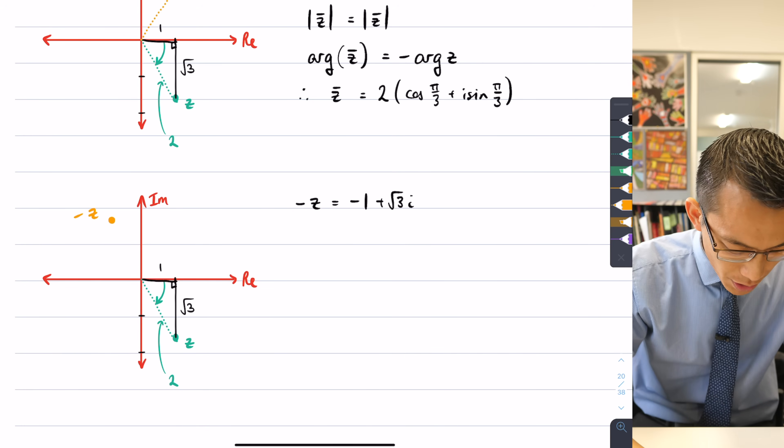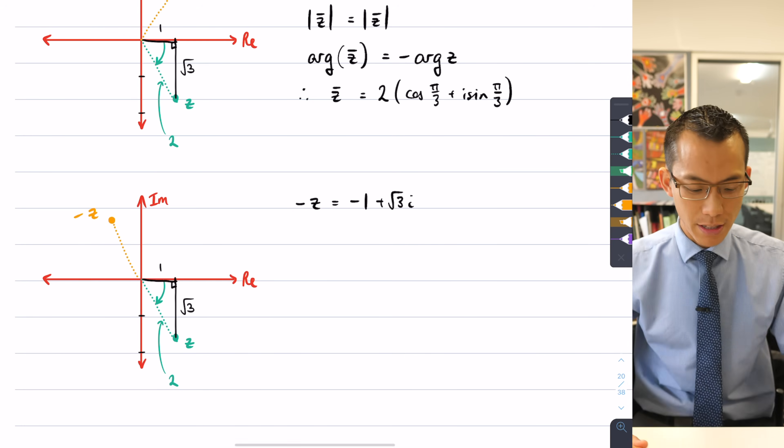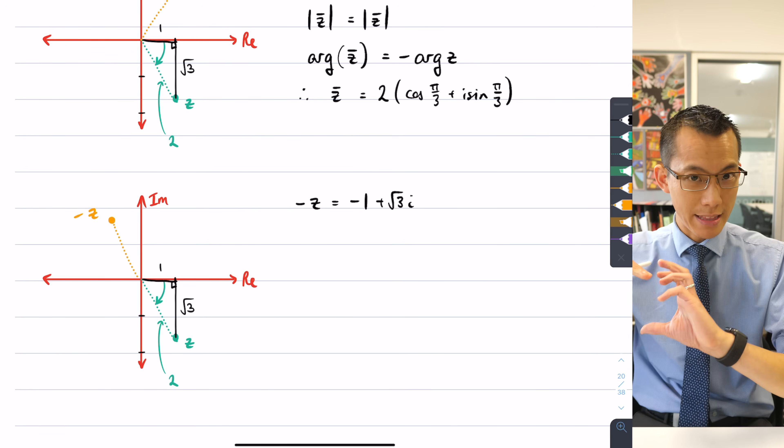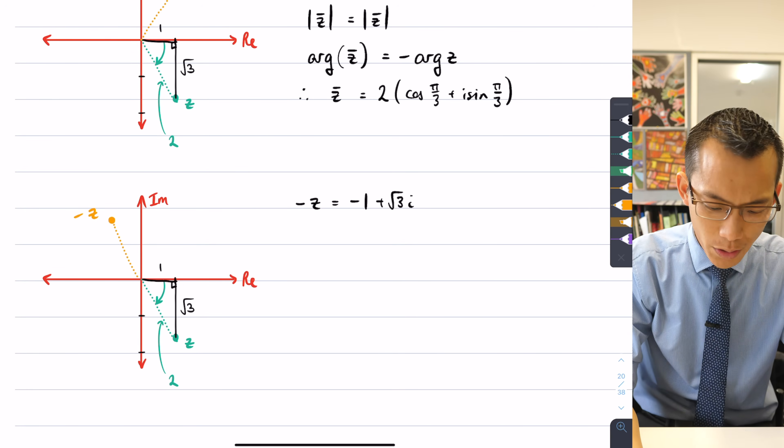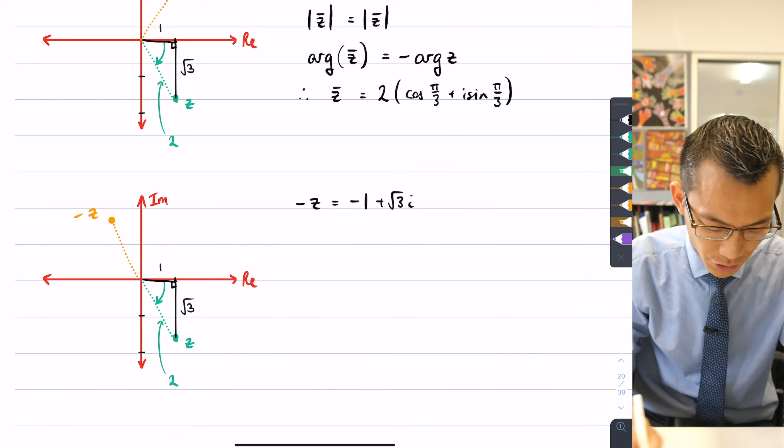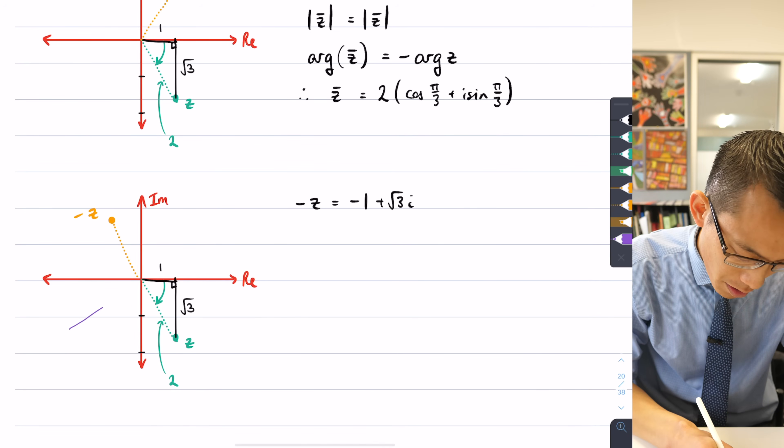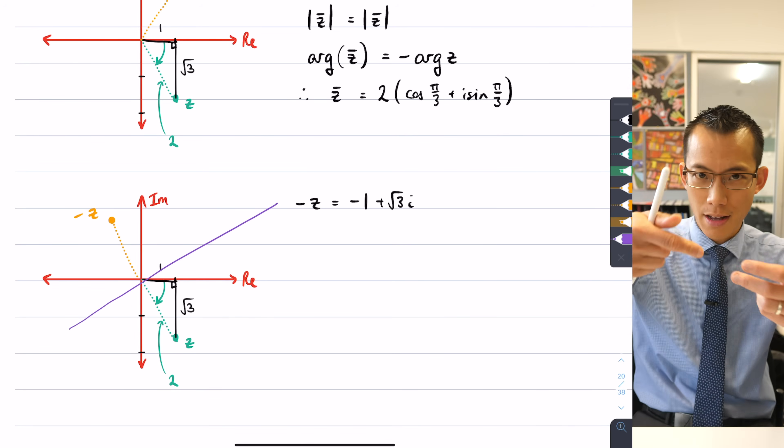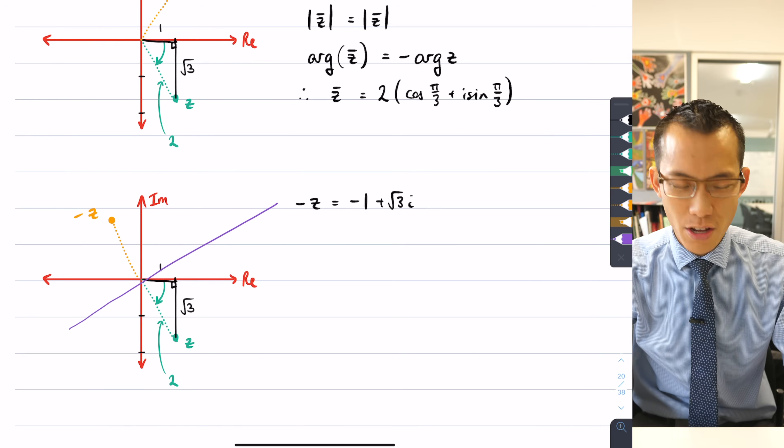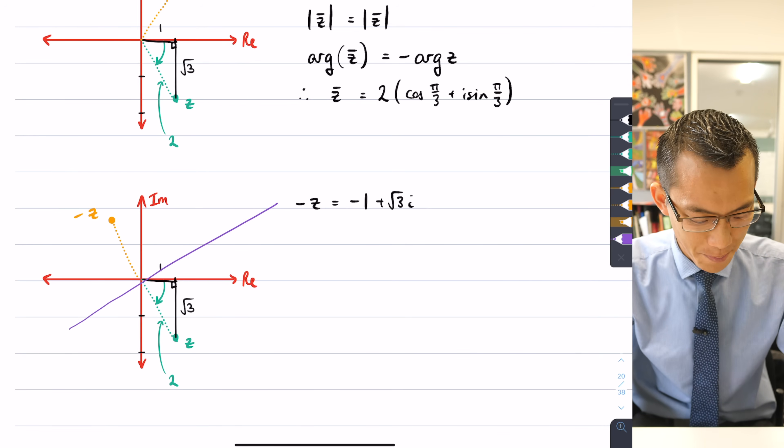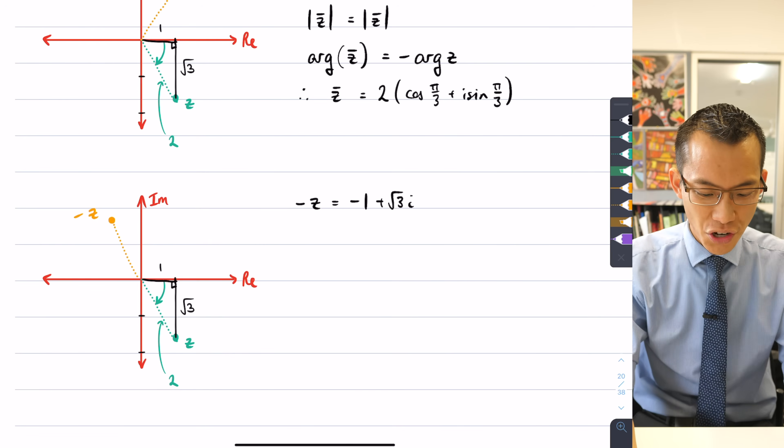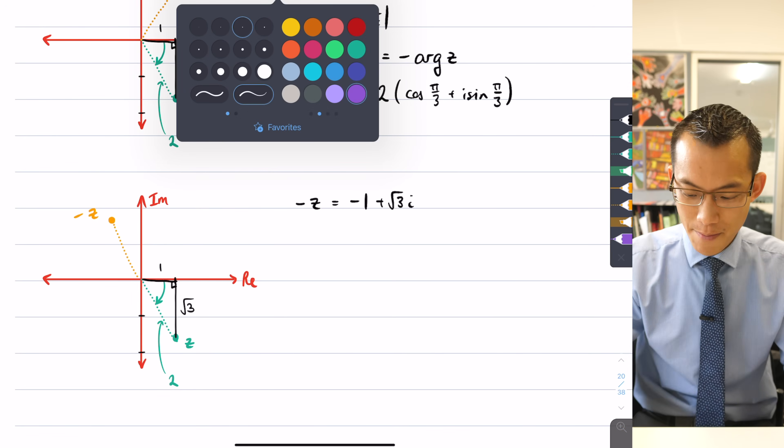So if I put my -z up here, you can see what's going on here. I've just literally rotated around, or if you want to think about it that way, you've reflected across, but what you've reflected across, you have to be quite careful with actually, you reflect it across this line here. Reflection requires a line, not just a point. So it's tempting to say the origin, but you have to be very sneaky with that, right?